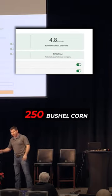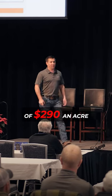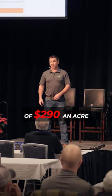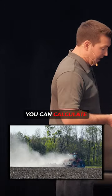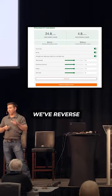A score of 4.8 on 250-bushel corn led to an opportunity of $290 an acre. What we've done in our system is you can calculate your farm practices today and it shows you a score. In this example, 24.8.